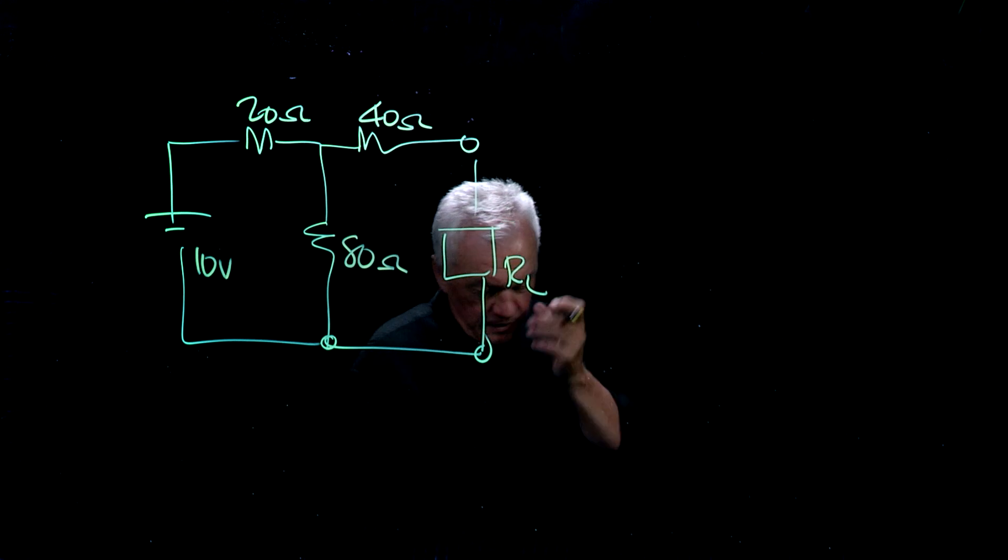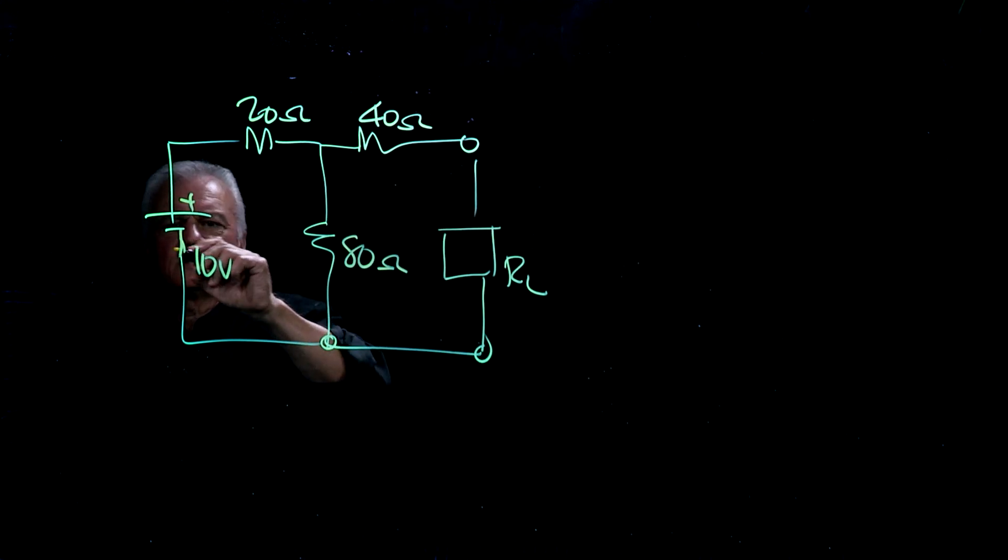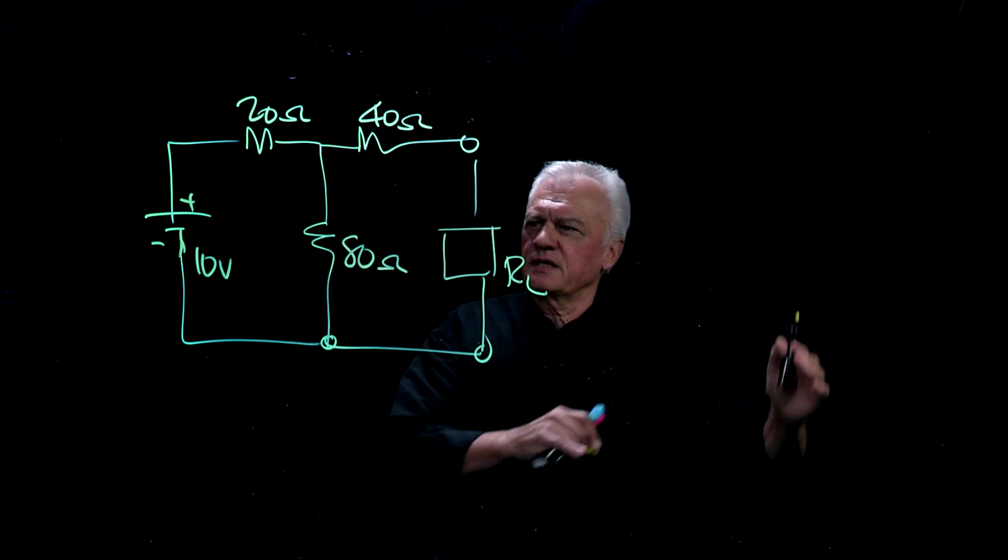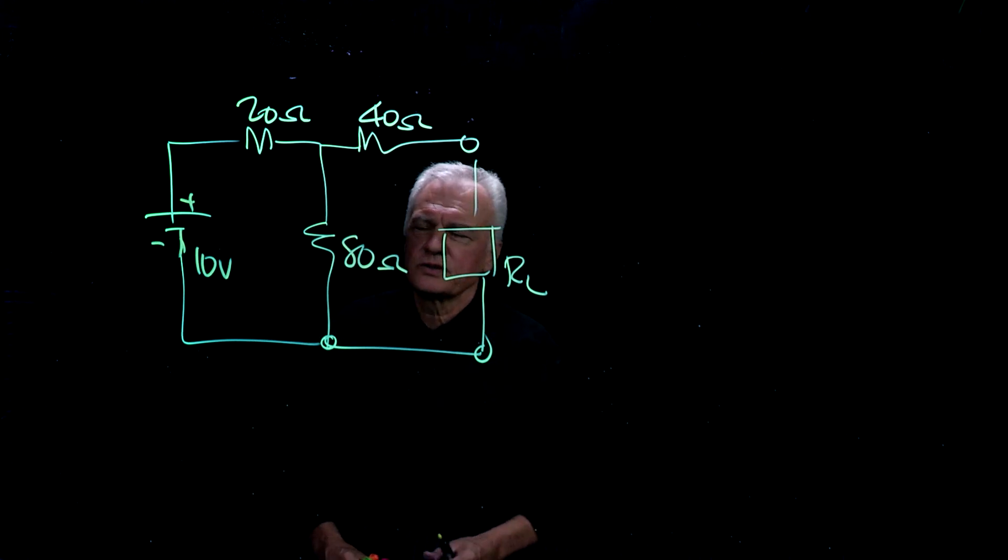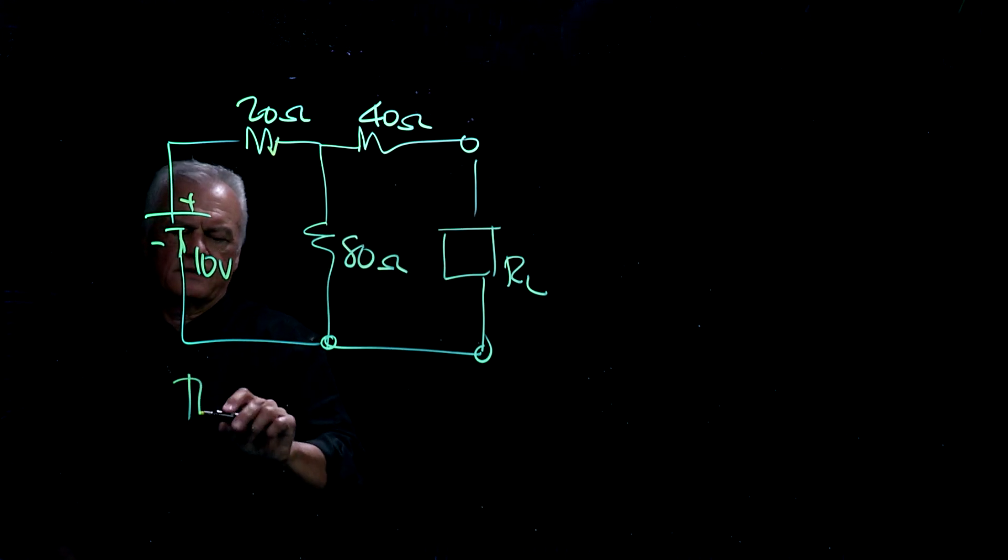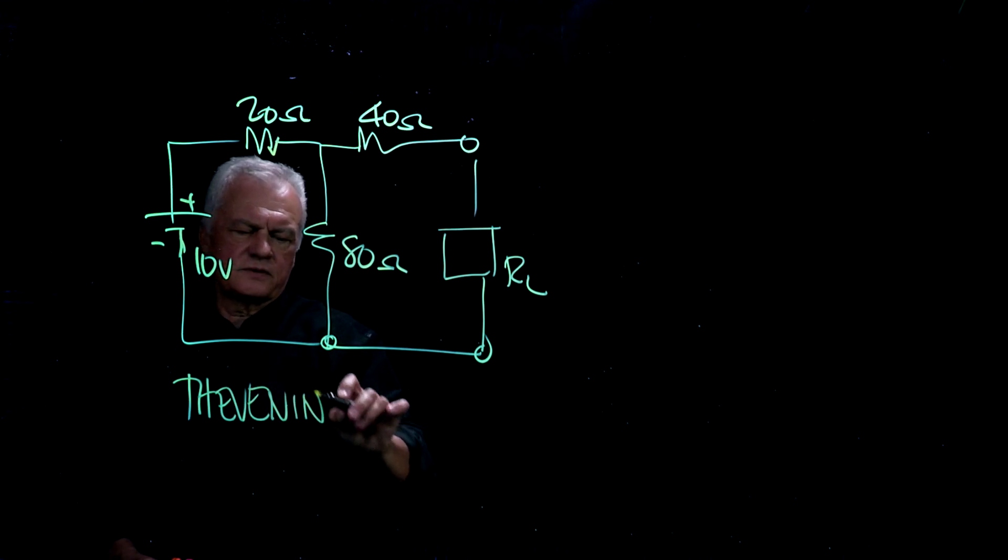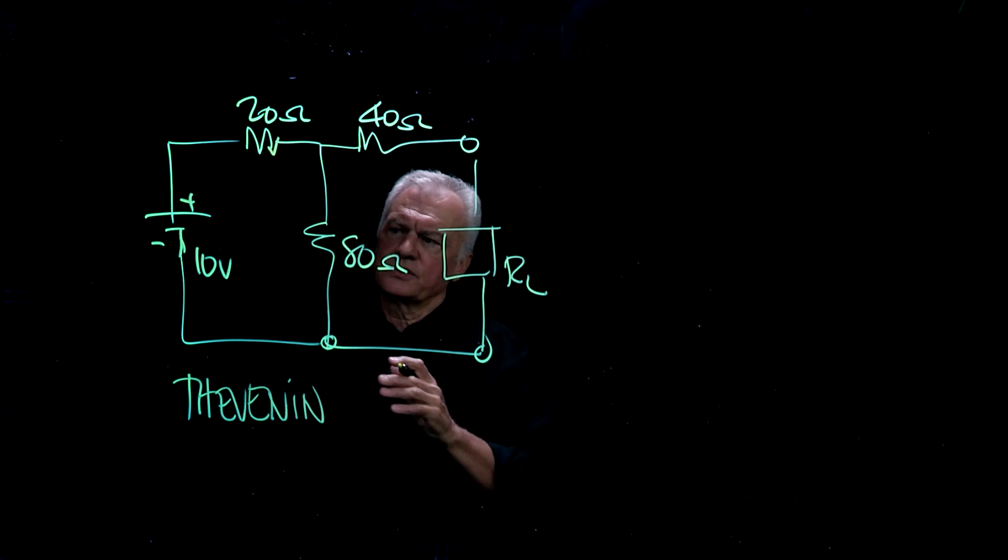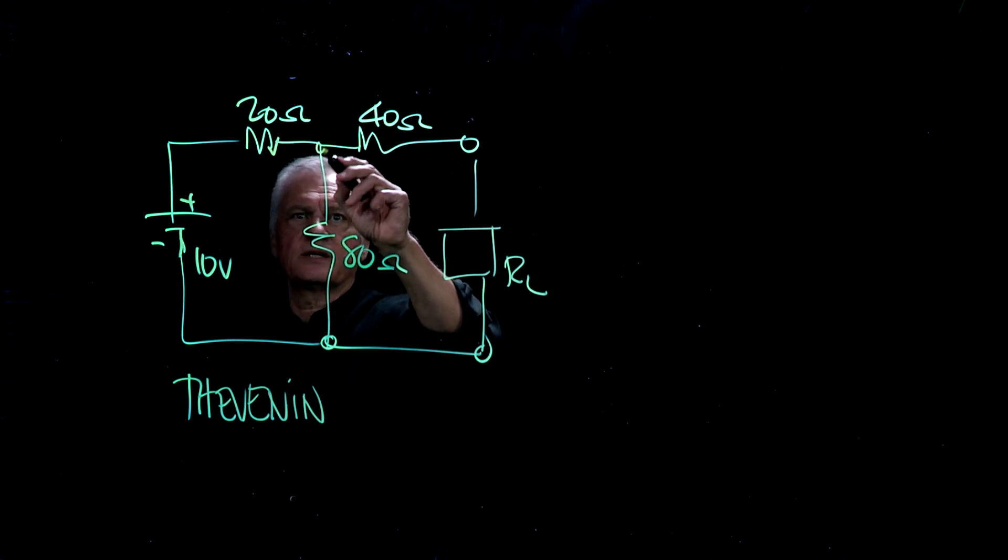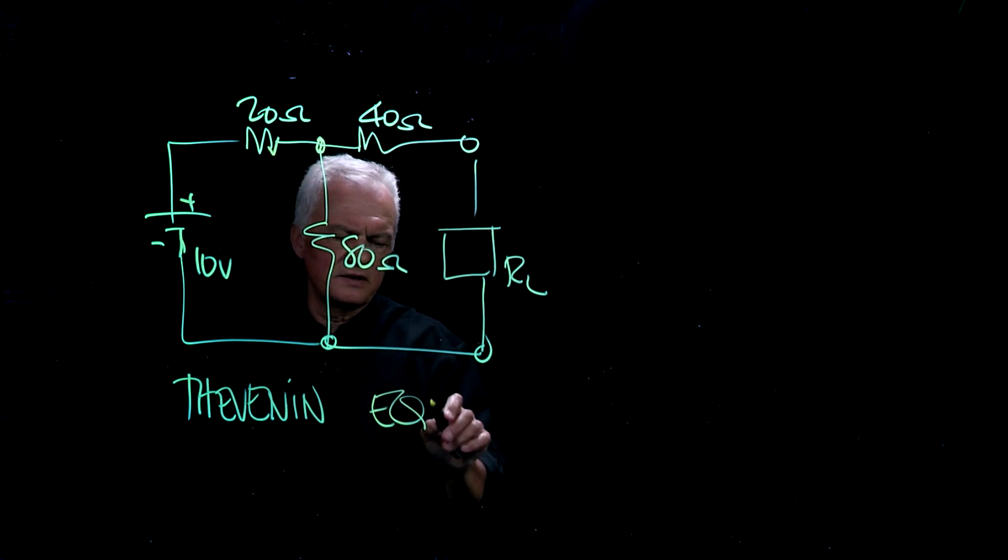So this circuit, if I continue on with additional circuits, I'm going to create myself a bit of a mess. So there was an individual named Thevenin, and Thevenin said that there's a way to reduce the complexity of circuits with internal source voltages and resistances, for example, to something much simpler.